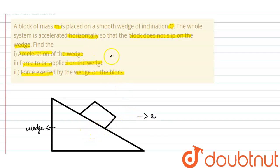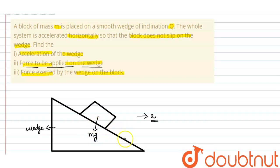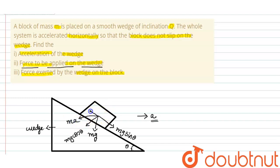The wedge along with the block is moving with acceleration a, so let us consider the pseudo force. For this block, forces are acting: the weight mg acts downward. If θ is the inclination angle, the components along the axes are mg sinθ and mg cosθ. There will also be a pseudo force m·a acting on the block, and its component along the incline is ma cosθ.